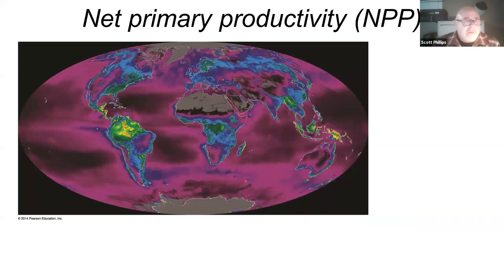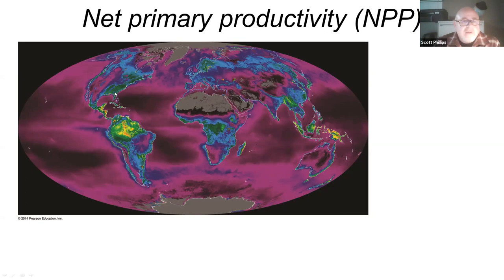There are different ways of describing primary productivity. There's gross primary productivity and net primary productivity — it's kind of like your paycheck: you have gross pay and net pay. Net primary productivity accounts for material lost in the process. It's probably easiest to just call it primary productivity without worrying too much about net versus gross.